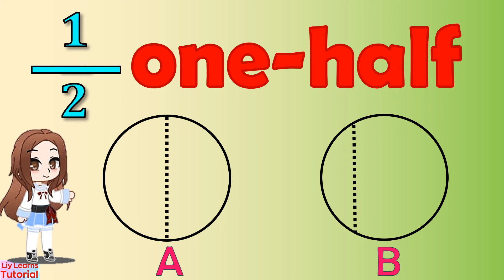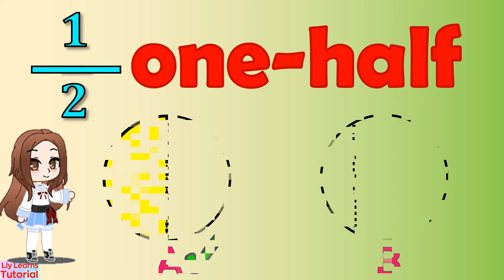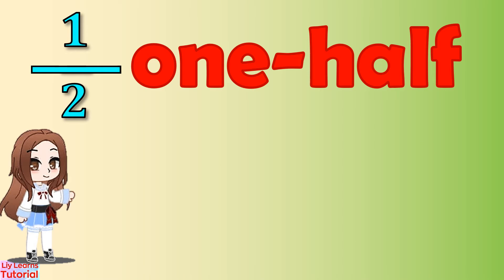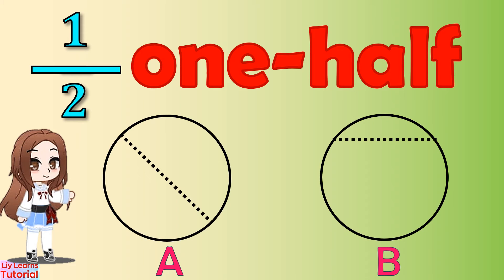Which of these shapes has been cut exactly in half? If you picked shape A, you got it right! Let's go ahead and color one half. What about this? Correct — shape B. Now we'll color one half. Which shape has been cut exactly in half? Shape A is the correct answer. Let's color one half.